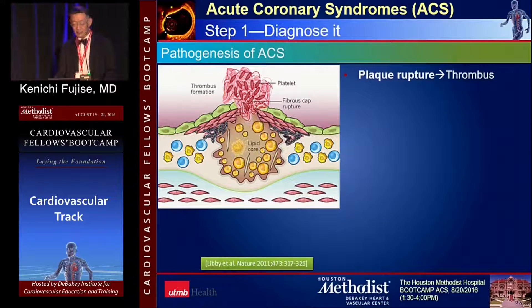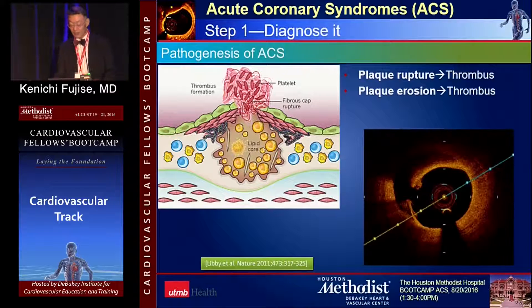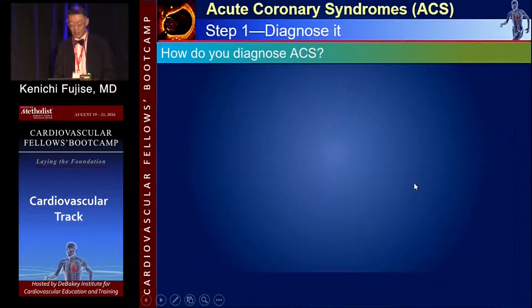The pathogenesis of ACS can be due to plaque rupture leading to thrombosis, or plaque erosion. This diagram is an OCT image of plaque rupture of one of the major coronary arteries.